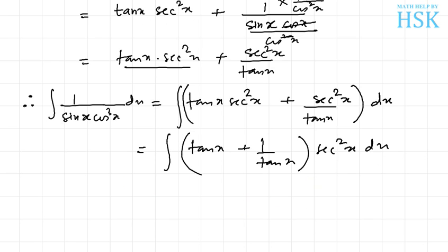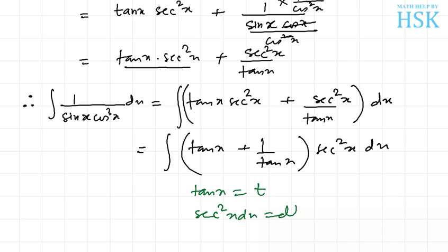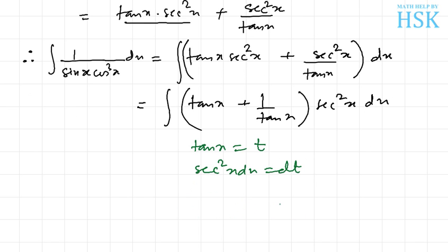Now I substitute tan x equal to t, which gives sec square x dx equal to dt. So the integral becomes the integral of (t + 1 upon t) dt.